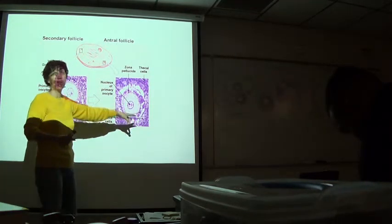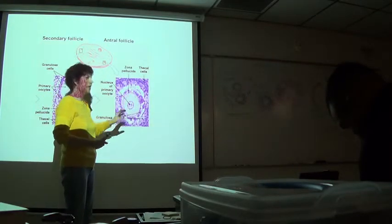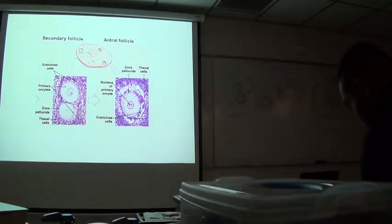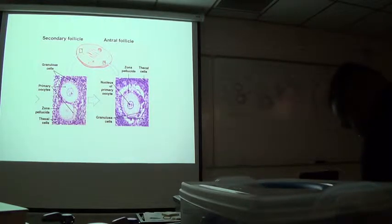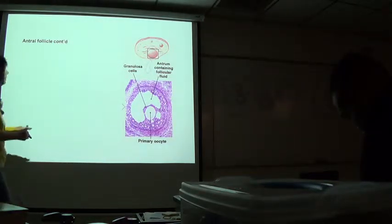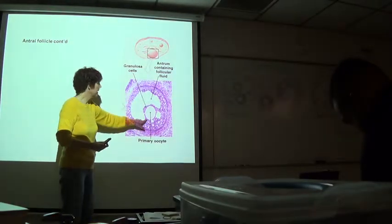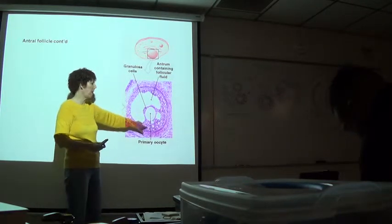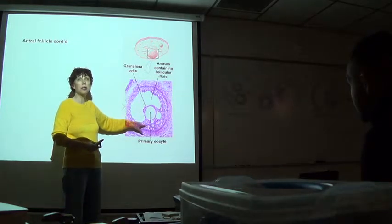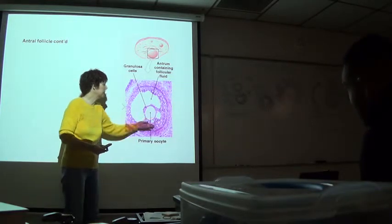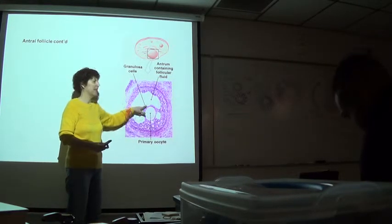This is an early antral follicle — it has just a few clusters of spaces that haven't yet coalesced to form one large antrum. But as soon as you can see just one small space, we change its classification to antral follicle. Now it's starting to get more organized, the antrum is getting larger. You can see the corona radiata attached to the egg. This cluster or stalk is known as the cumulus oophorus — cumulus means cloud, oophorus means egg — so the egg cloud, and that's what's ovulated.